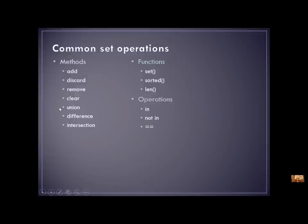So you're thinking about sets — these are things that you do with sets. We also have functions: the set function that creates a set, sorted, which is similar to sort, and len. Len is one of those functions you can use for a variety of different data types that will tell you how many elements. We also have in and not in, which we had also for a list. And then we have equals equals or not equals, so you can compare two sets to see if they are the same.